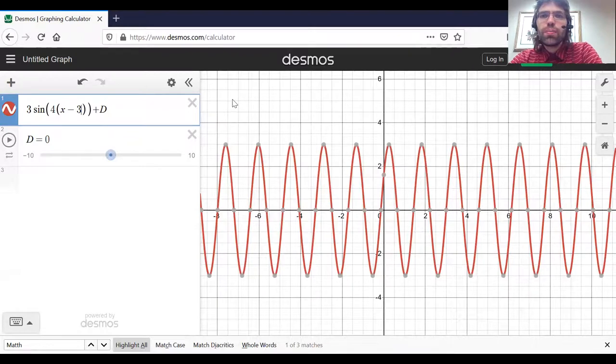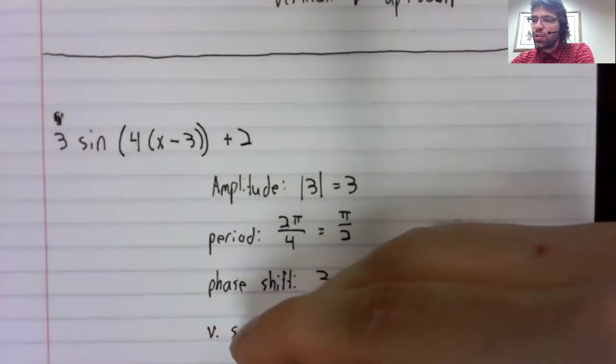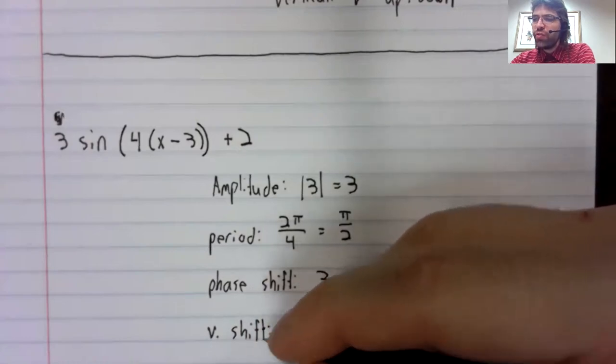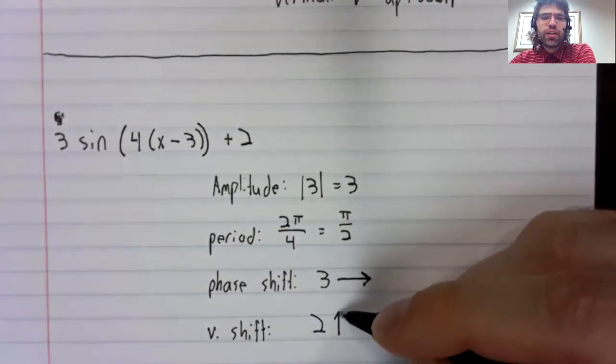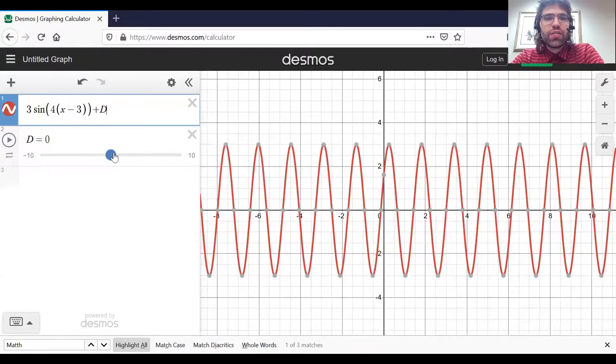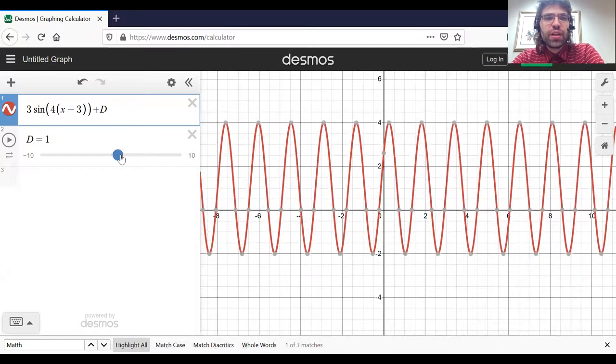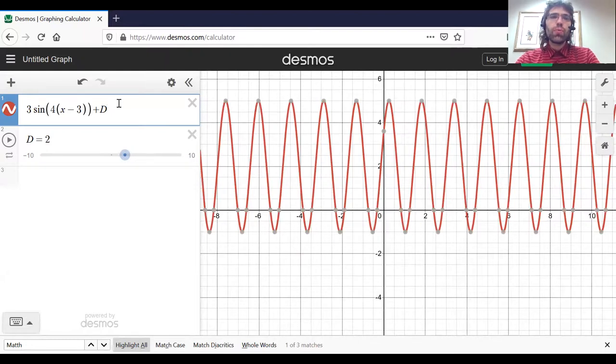Only one thing left, D. And the curve goes up. And here's D equals two.